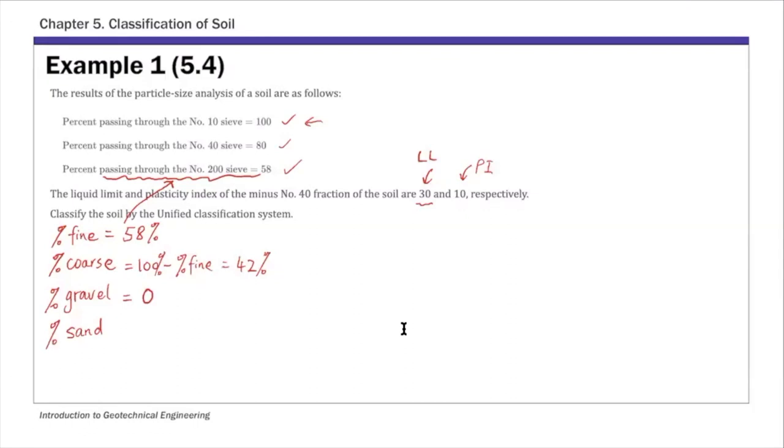So this means that all the coarse grains are sand. So percent of sand is percent of coarse minus percent of gravel. And 42 percent.